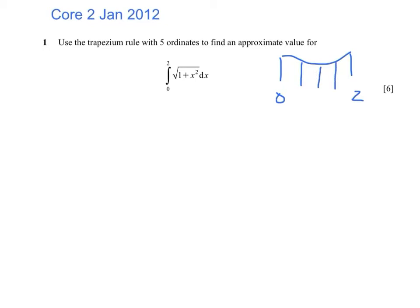That means I need 3 more. So it's going to be 0, 0.5, 1, 1.5, and 2. This is not the curve 1 plus x squared, it's square root of 1 plus x squared. It's just my method for working out the values of the ordinates.